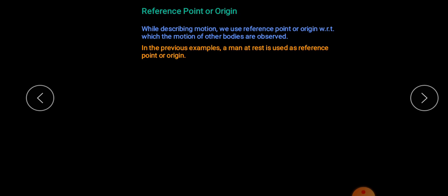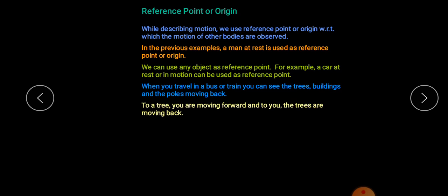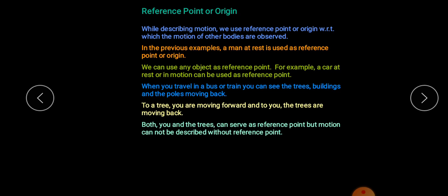In the previous example, a man at rest was used as reference point or origin. We can use any object as a reference point — for example, a car at rest or in motion can be used as a reference point. When you travel in a bus or train, you can see trees, buildings, and poles moving backward. Both you and the tree can serve as reference points, but motion cannot be described without a reference point.